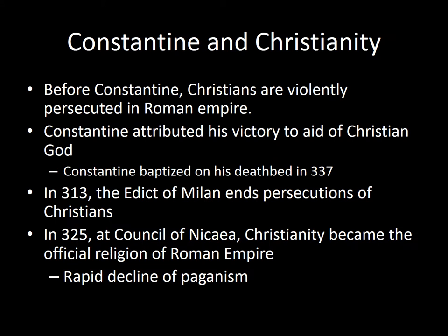Before Constantine, Christians are persecuted within the Roman Empire, often violently. However, in the year 312, Constantine beats Maxentius and attributes his victory to the aid of the Christian God, and so he ends the persecution of Christians. In the year 325, he declares Christianity to be the official religion of the Roman Empire. This leads to a rapid decline of paganism and an entire transformation of religious life in Europe.